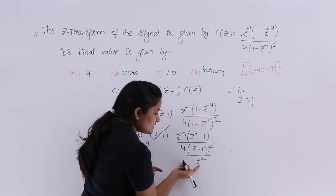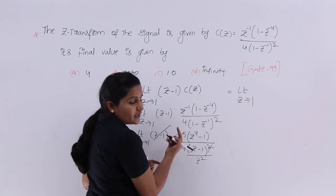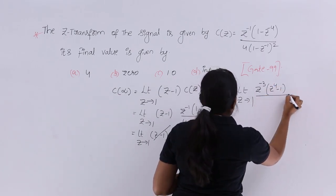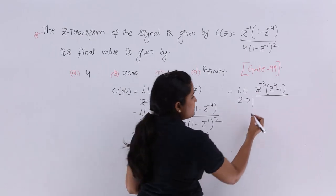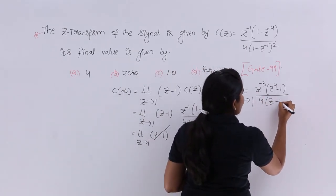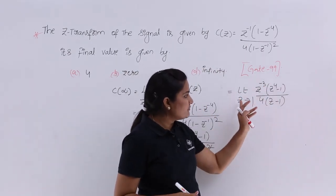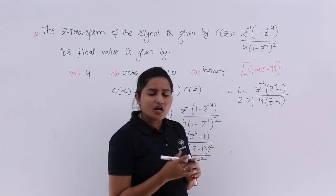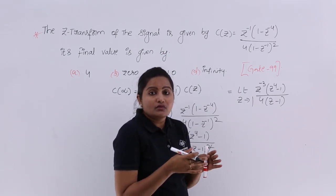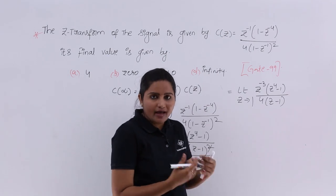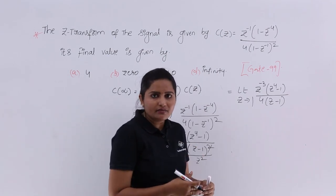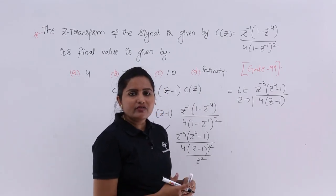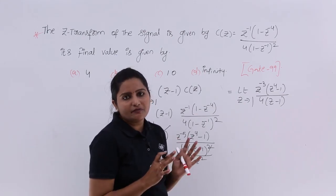After cancellation, the expression becomes: limit Z tending to 1 of Z⁻³ into (Z⁴ - 1) divided by 4 into (Z - 1). But if we substitute Z = 1 here, we still get (1 - 1) in the denominator, giving infinity. So I am still not satisfied and need further reduction — I need to try for a finite value.